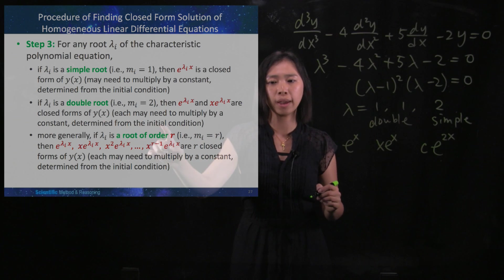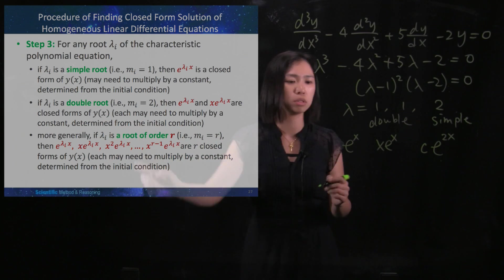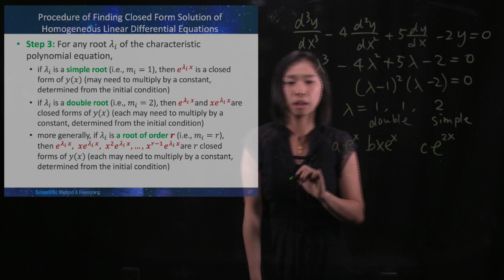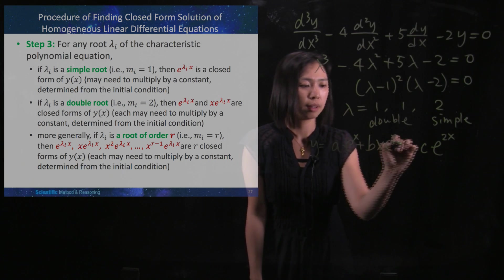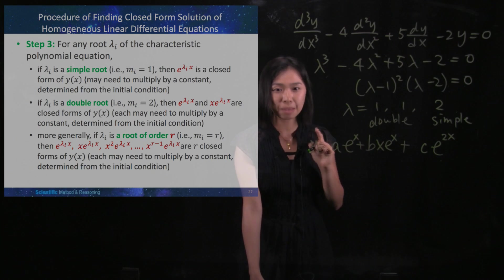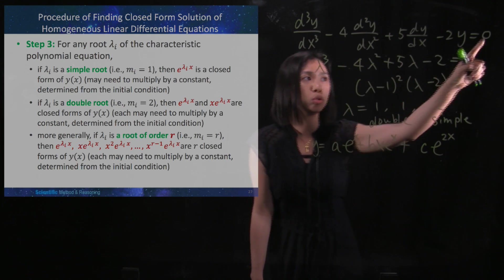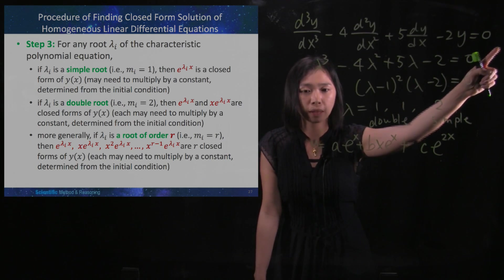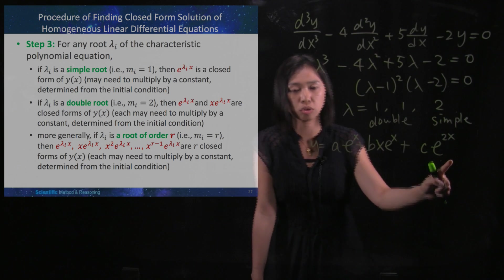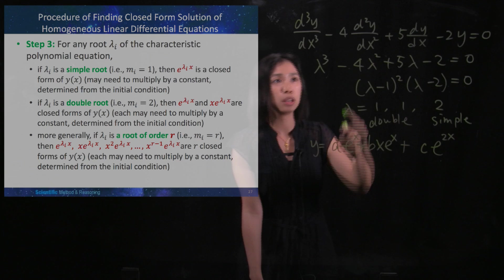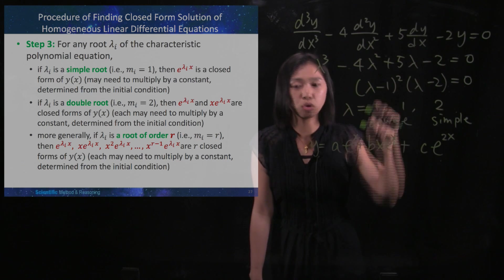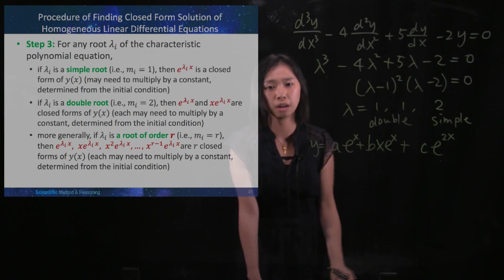Then the closed form of y, I still need to multiply by a constant. Maybe I multiply them by a and b. So then y would be these adding up together. This is the general solution to this differential equation. And if I give you the initial conditions, then you are able to determine the a, b, c here.